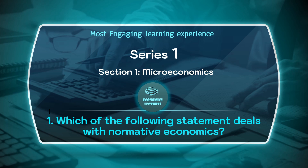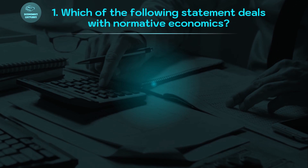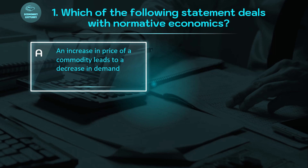Our first MCQ is: which one of the following statements deals with normative economics? Let us see the answer to it. We have four options. The first option is: an increase in prices of a commodity leads to a decrease in demand.